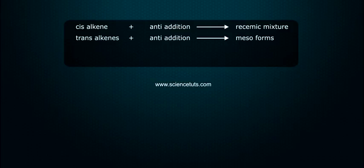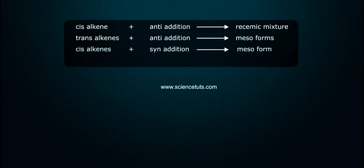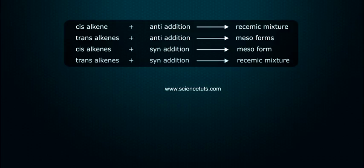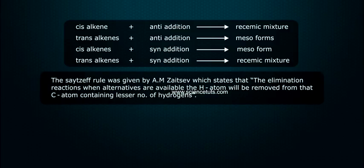Trans-alkenes with anti-addition gives meso forms. Cis-alkenes with syn-addition gives meso forms. Trans-alkenes with syn-addition gives racemic mixture.